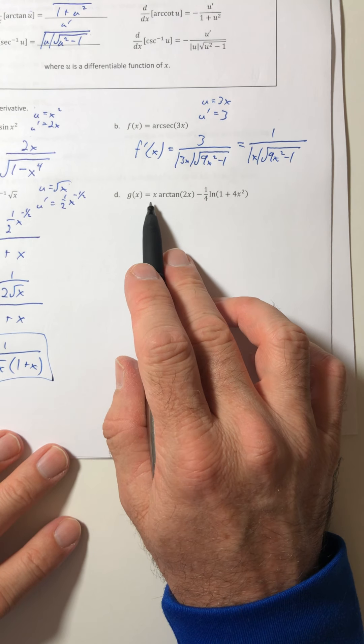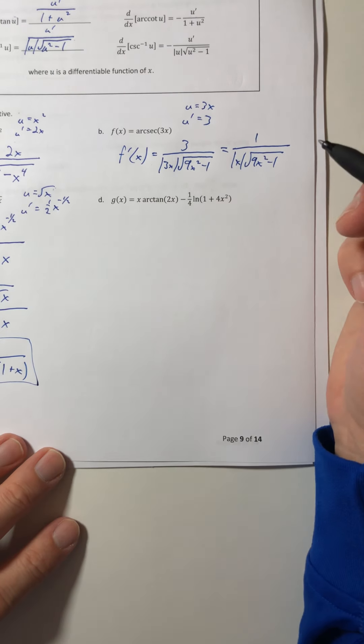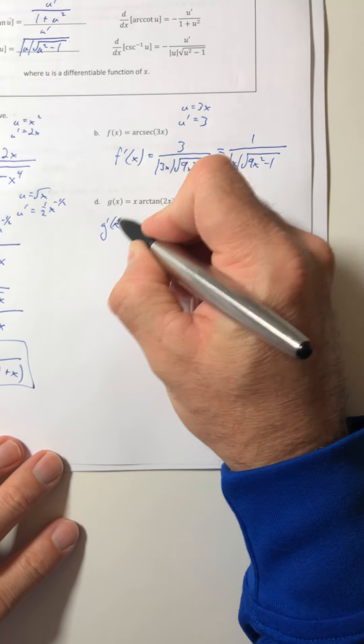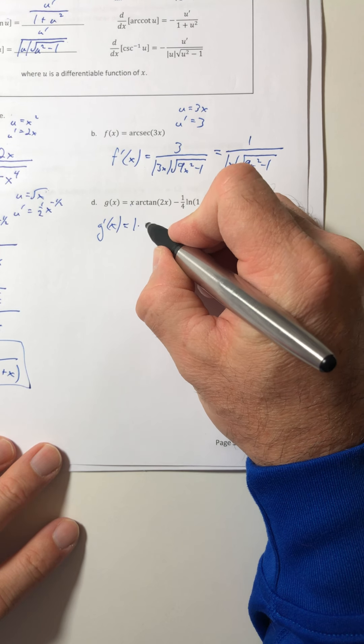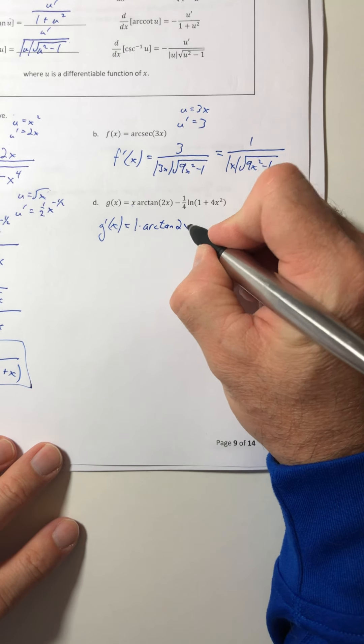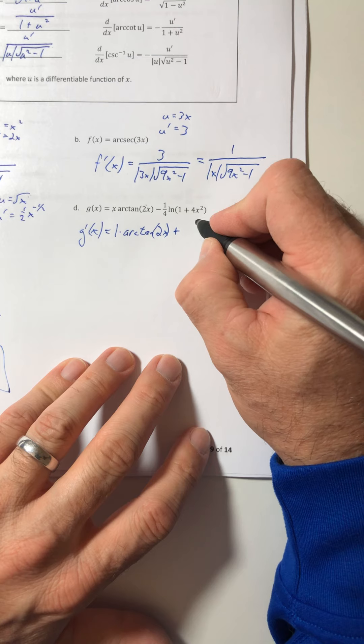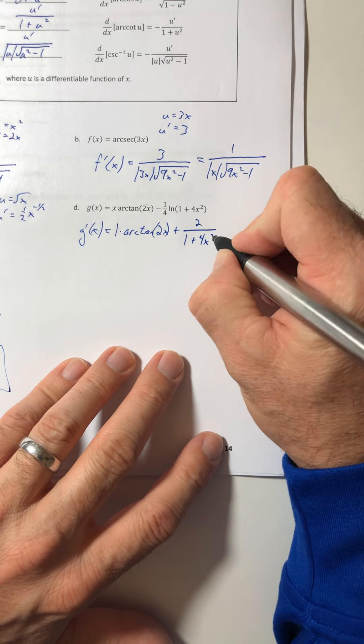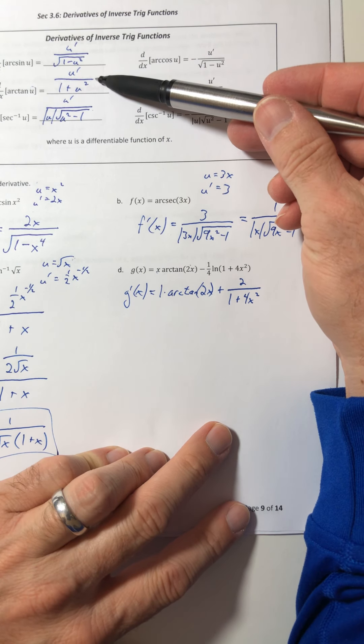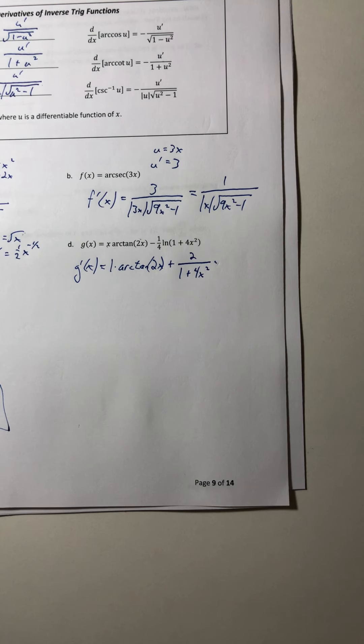All right, part d. Now we've got something interesting. Now we've got a product rule with an inverse trig function and a logarithm. That's pretty cool. A lot of stuff happening in there. So let's just work our way through it. Okay, so product rule to start. Derivative of x is 1 times arctangent of 2x plus the derivative of arctangent. So the derivative of 2x is just 2 all over 1 plus, take the 2x and you've got to square it. So that would be a 4x squared. So we just followed that formula right there.